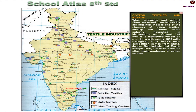India's main competition comes from China, Japan, Bangladesh and Egypt. Europe, USA and Russia are the other main producers of cotton textiles.